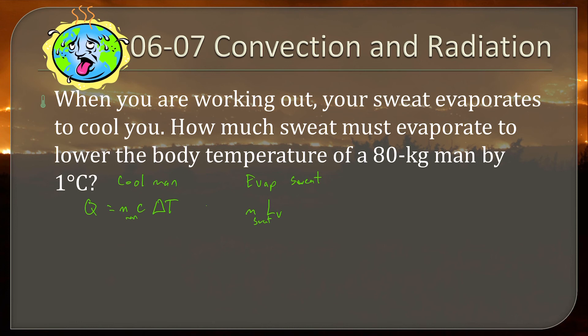There's no net heat loss, so the amount of energy used to cool the man is the same as the amount of energy used to evaporate the sweat. So those are going to be equal to each other. The mass of our man is 80 kg. The C for body tissue is 3500 joules per kg degrees Celsius. That's from a table we had. And our change in temperature is 1 degrees Celsius.